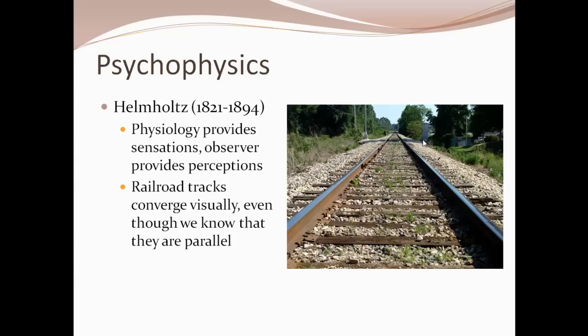Here's a great example: you see train tracks going off in the distance. From personal experience you know those tracks do not converge, even though on screen they appear to be approaching each other. You understand through cognitive processing and the process of perception that even though the sensations suggest the rails will converge, they really don't. Those railroad tracks look like they converge, but in reality they are parallel all the way down the track — otherwise trains would have serious problems.